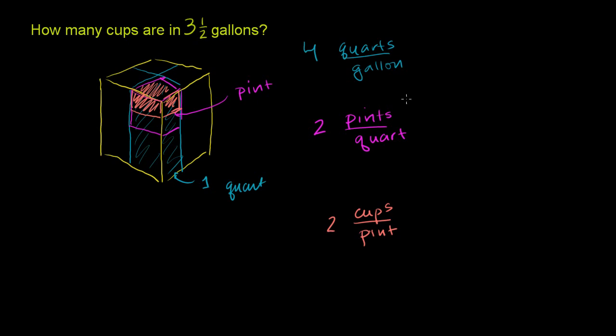If you have 4 quarts per gallon times 2 pints per quart, this gives you 4 times 2 equals 8. The quarts cancel out, and you have 8 pints per gallon. That makes complete sense because we had 4 quarts in this gallon, and each of those quarts have 2 pints in them.